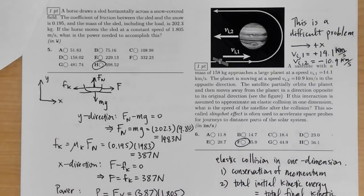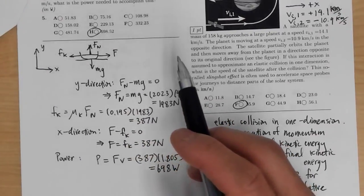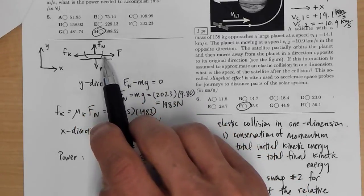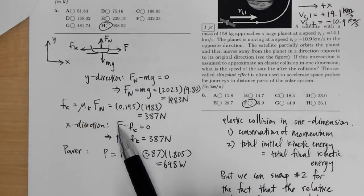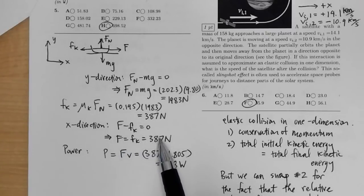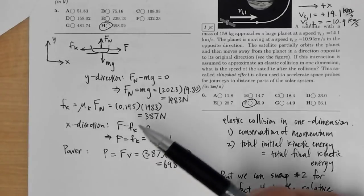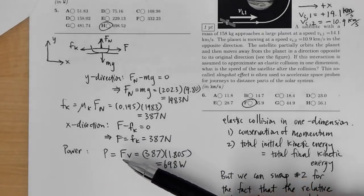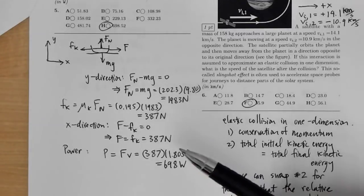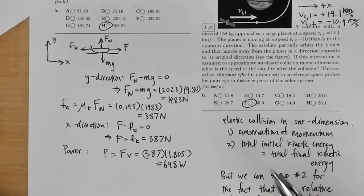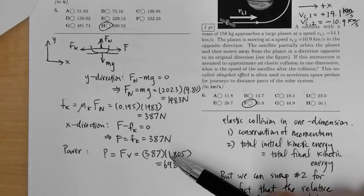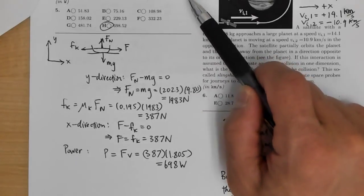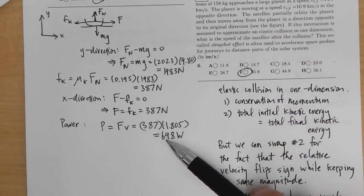In the x-direction, since the sled moves at constant speed, acceleration is zero. So the applied force equals the friction force: F = Fk = 387 N. The power for a constant force is force dotted with velocity. Since they point in the same direction, power = 387 × 1.805 = 698 watts.